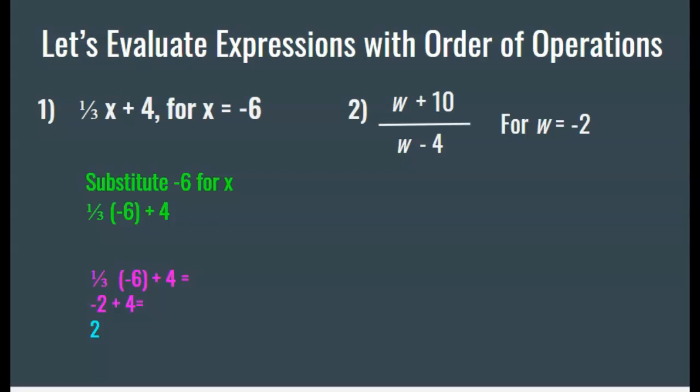On to number 2, this looks a little more complicated, but it really isn't. Again, you start by substituting negative 2 in for w. Negative 2 plus 10, and then on the bottom you get negative 2 minus 4. On the top, the signs are different, so I find the difference and keep the sign of the larger number, which is 10. On the bottom, the signs are the same, so I add them and keep the sign. I should get 8 over negative 6, which simplifies to 4 over negative 3, or negative four-thirds.